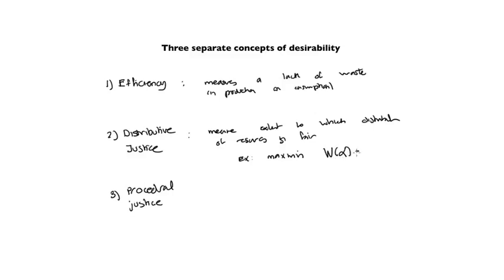which basically says that the social distributive justice at an allocation alpha, which we're going to denote by measure W of alpha, is given by the minimum over all consumers i of the utility that they get at the allocation, at what the allocation gives them basically. So you compute the utility for every individual, you compute the minimal utility, and that will be the measure of distributive justice according to this Maximin criteria.